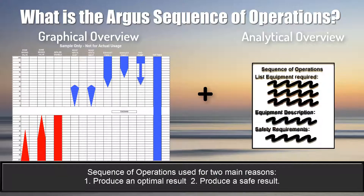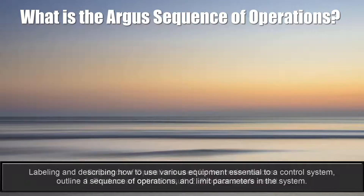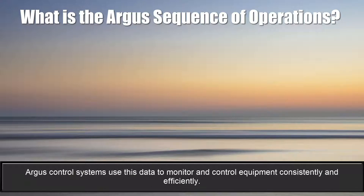A sequence of operations is used for two main reasons: to produce an optimal result and to produce a safe result. We're labeling and describing how to use various equipment essential to a control system, and to outline a sequence of operations and limit parameters within the system. Argus control systems use this data to monitor and control this equipment consistently and efficiently.